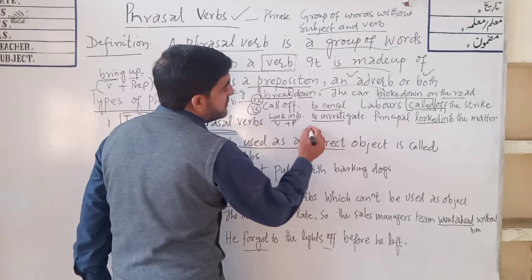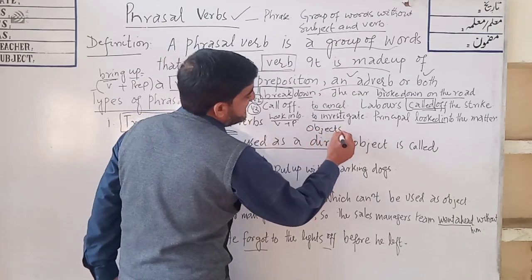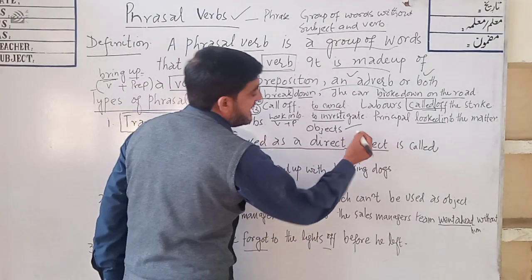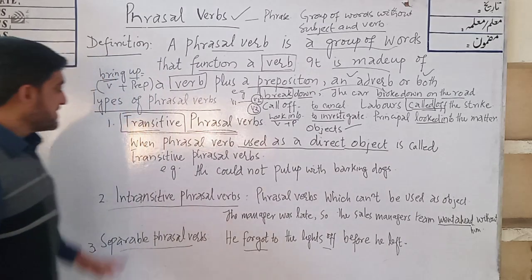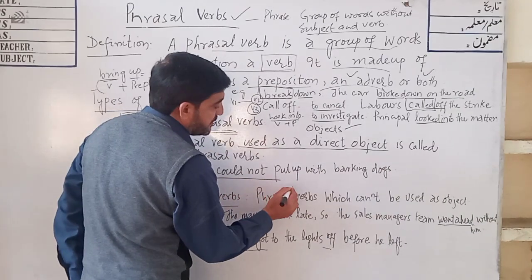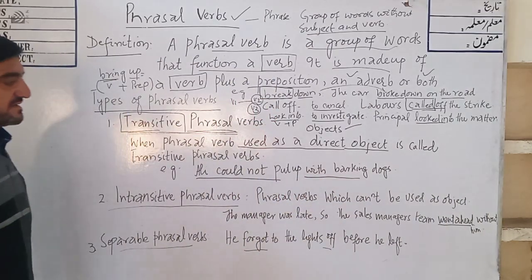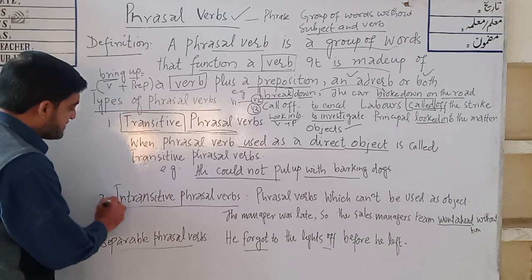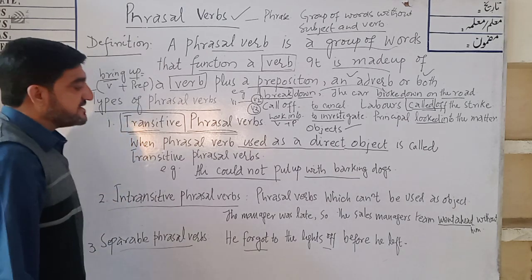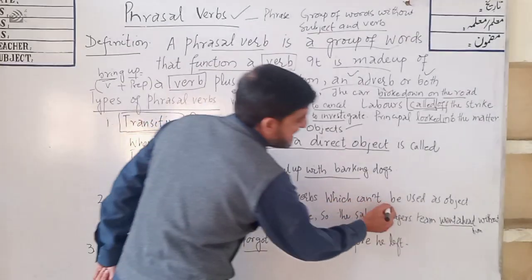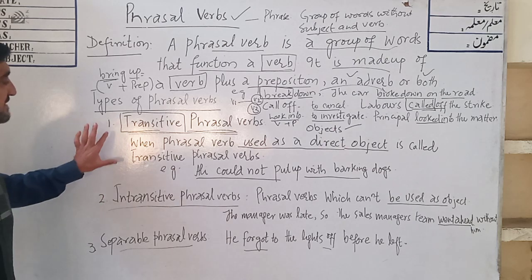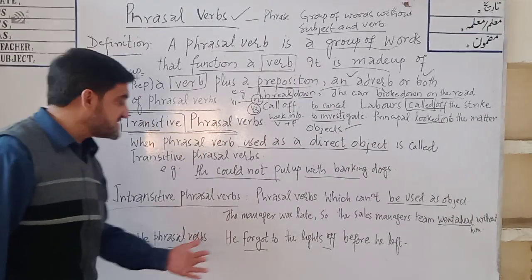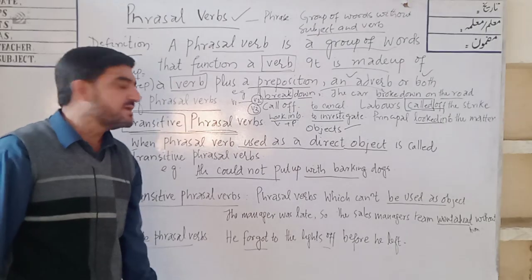You should know that there are two types of objects — one is called direct object, which refers to a thing, and indirect object, which refers to a person. For example, 'Ali could not put up with barking dogs.' Here 'put up with' is the transitive phrasal verb used with a direct object. But intransitive phrasal verbs cannot be used with objects.